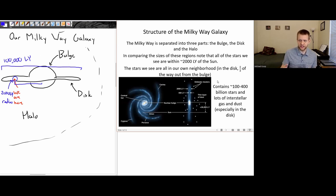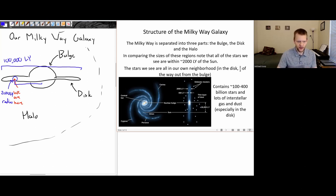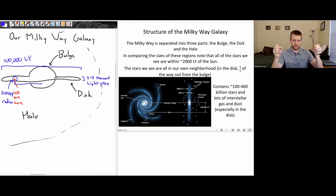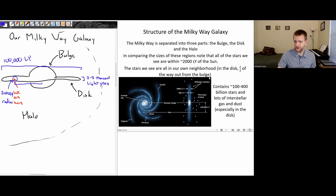Our galaxy contains somewhere between 100 and 400 billion stars, plus a lot of interstellar dust and gas, especially in the disk. The thickness of that disk is only a few thousand light years — around 2,000 to 3,000 light years. The relative scale of the width versus height of the disk would be pretty similar to the dimensions of a CD or a DVD.